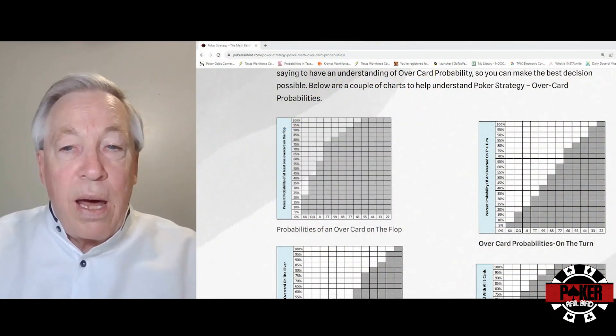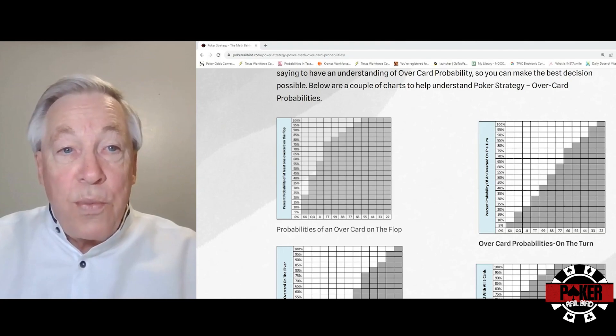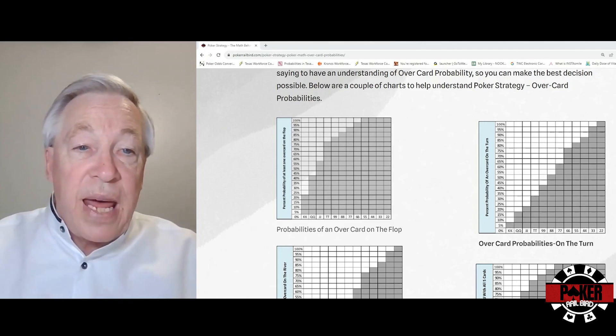On pokerubber.com we have a number of charts that will depict those probabilities of an overpair to your pair based on the number of players, anywhere between heads up and a full game of nine.